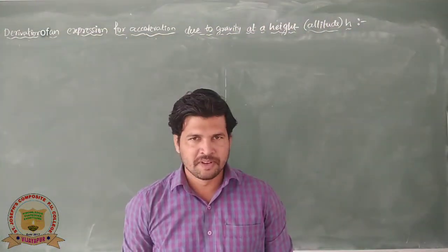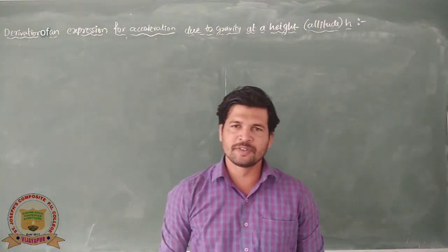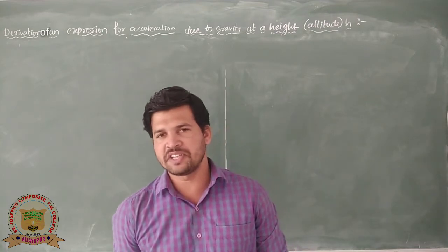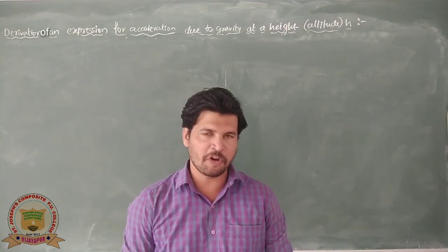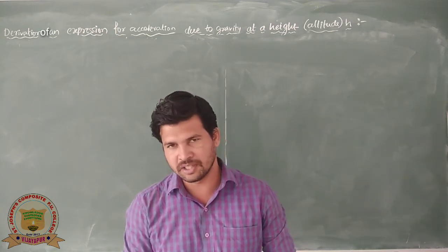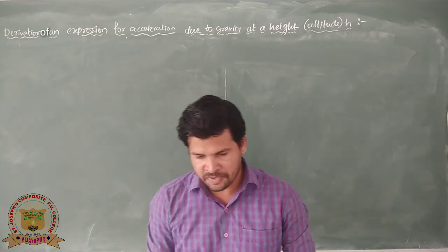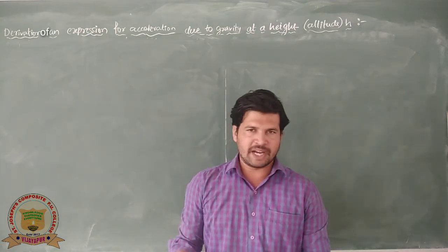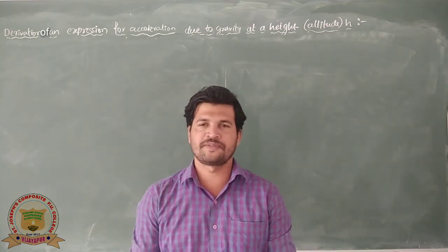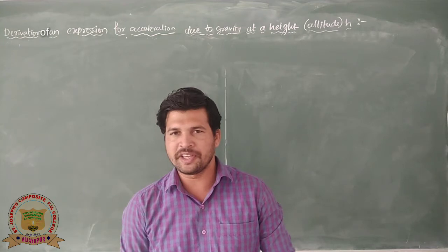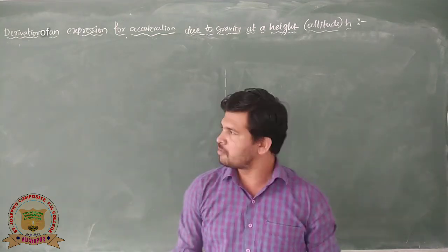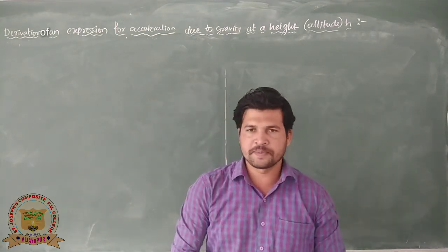Hello students. In this video we are going to derive an expression for acceleration due to gravity at a height h, or at an altitude h, from the surface of the earth. In the last video we derived an expression for acceleration due to gravity on the surface of the earth, but this time the body is at height h above the surface.